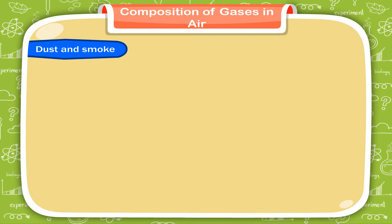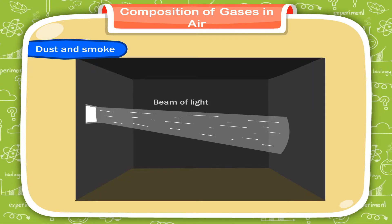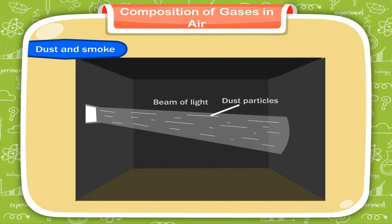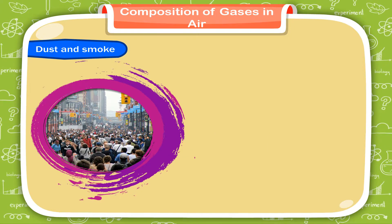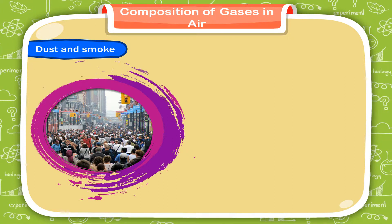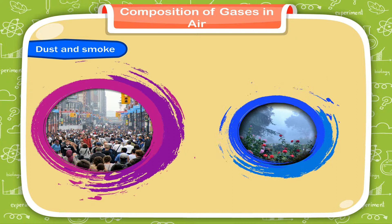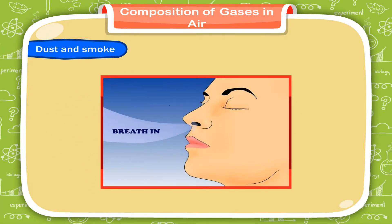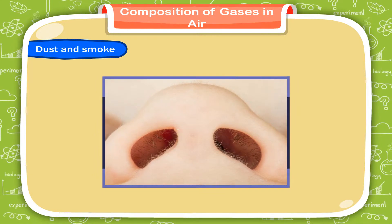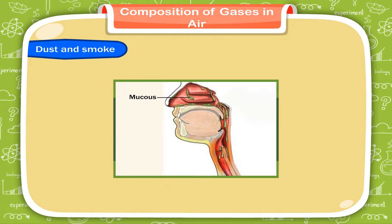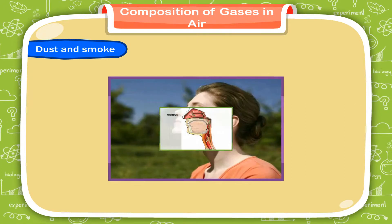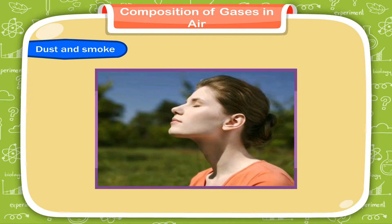Dust and Smoke. If we observe a fine beam of light entering a dark room, we see fine particles of dust in it. Thus, air contains dust particles. The percentage of dust in air varies from place to place. A crowded street has a higher percentage of dust and smoke in comparison to an open place like a garden. The air we breathe in also contains dust which is filtered by the fine hairs inside the nostrils. Mucus present in the inner lining of the nose also helps us get rid of dust. Thus, it is always advisable to breathe through the nose rather than the mouth.